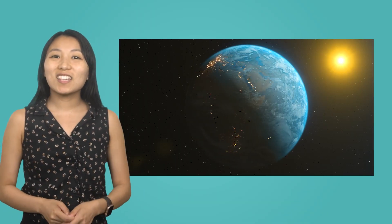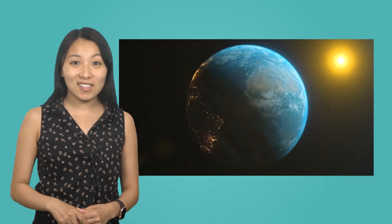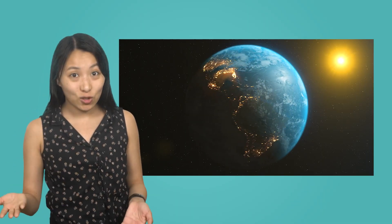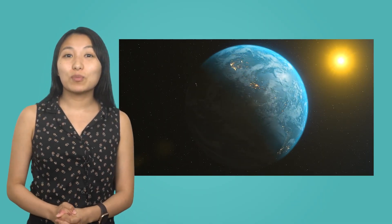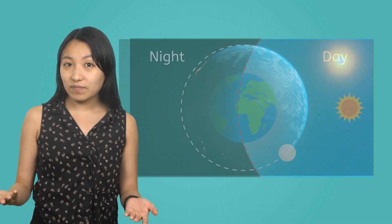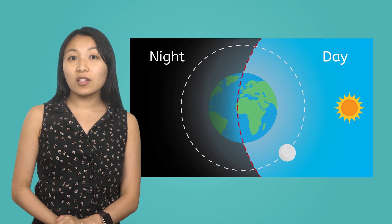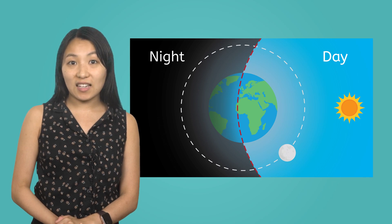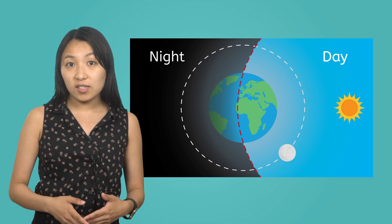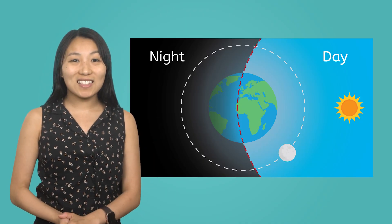How long do you think it takes for Earth to complete one full rotation on its axis? It takes 24 hours to complete one rotation, which equals one full day. This constant rotation gives us a regular cycle of day and night — the side facing the sun changes, giving us daylight, while the side facing away experiences night.